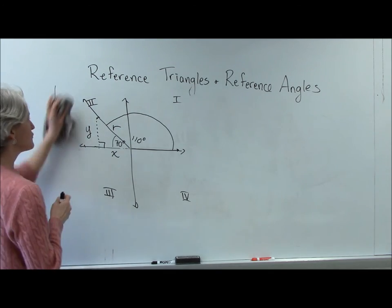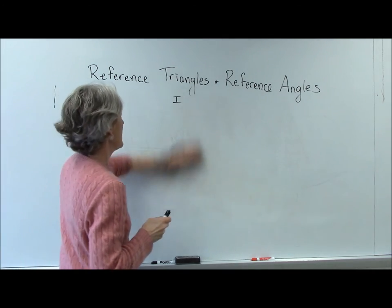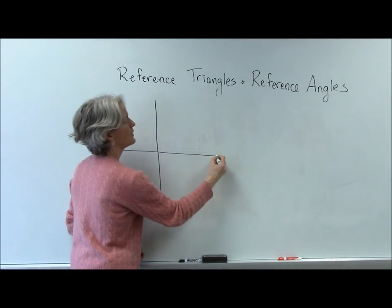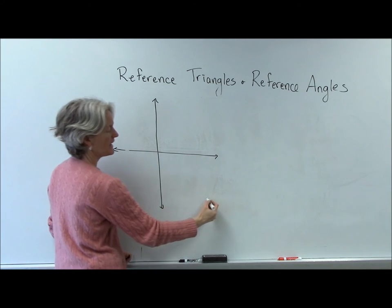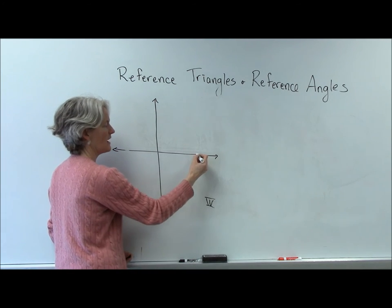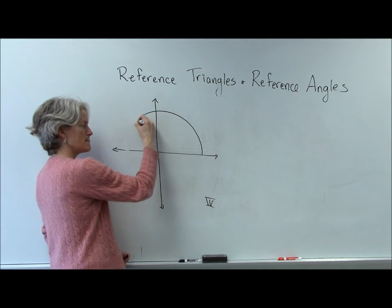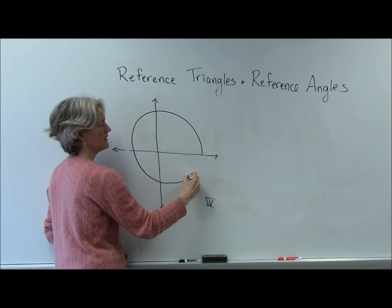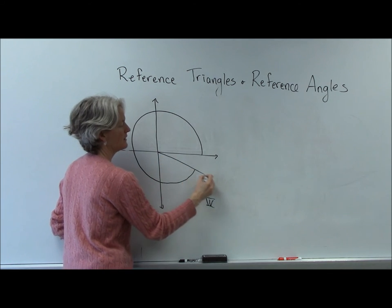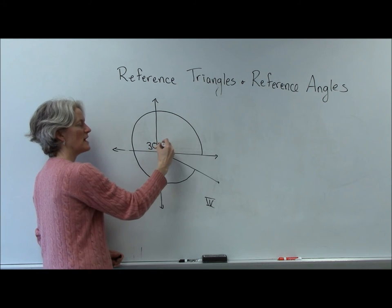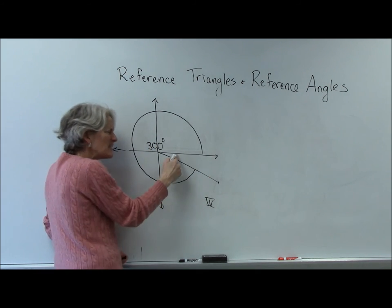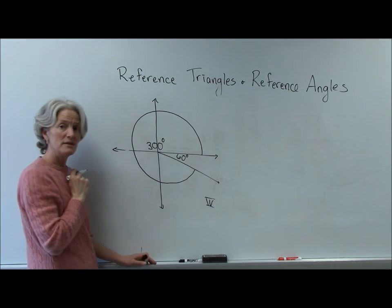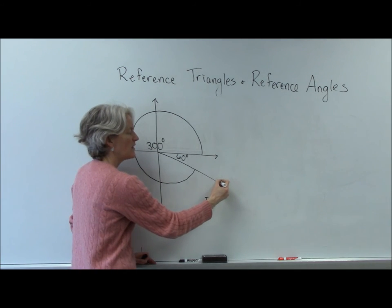Okay? So these are all reference triangles and reference angles. And again, you're always doing it relating to the x-axis. So if I'm terminating in the fourth quadrant, let's say, let's say, 0, 90, 180, 270, where should I stop? 300. 300. Beautiful. So let's say I rotated 300 degrees in the positive direction. So how much does that leave me there for that little reference angle? Yeah, 60 degrees right there.